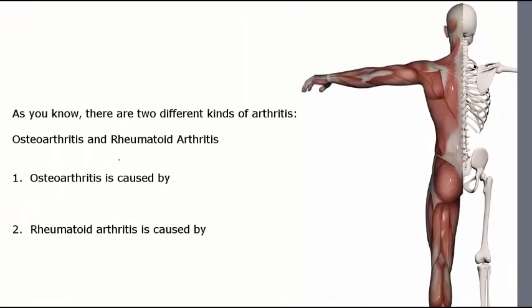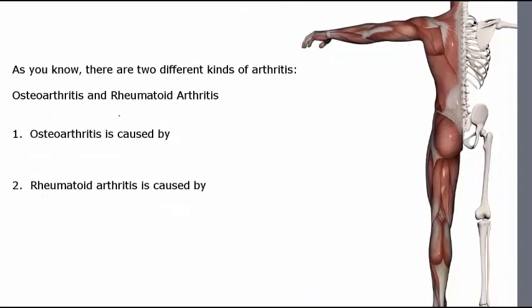So as you know, there are two different kinds of arthritis. There's osteoarthritis and there's rheumatoid arthritis. Rheumatoid arthritis being a general term for any of the autoimmune arthritises.